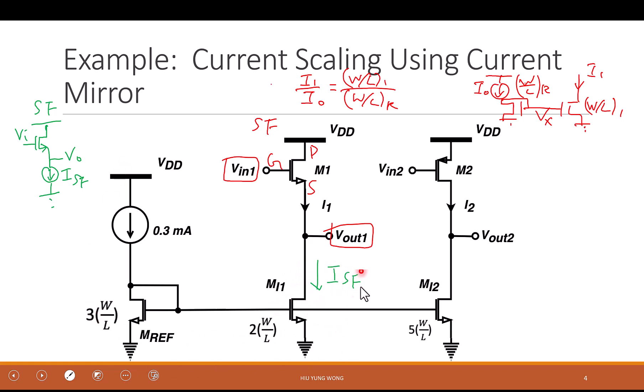Now, based on this, what is this again? This whole thing? Current mirror, right? So let's start. Based on the equation, what will be ISF?